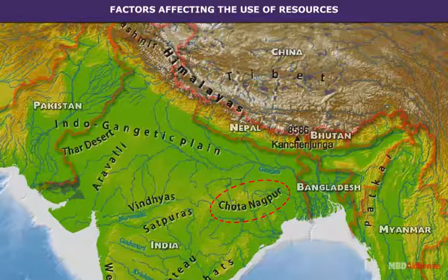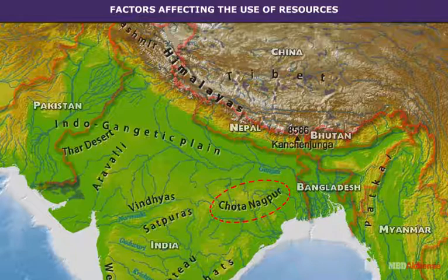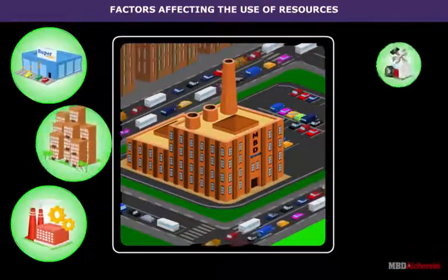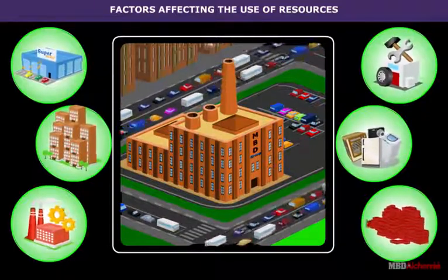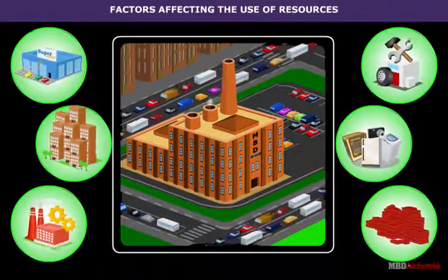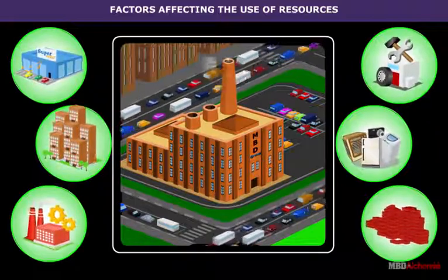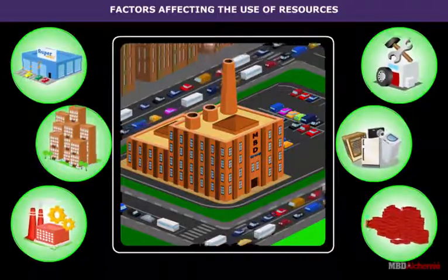Adequate Deposits: resources can be exploited commercially only if adequate deposits occur at a place. For example, iron ore deposits in the Chotanakpur area can be exploited on commercial lines because adequate deposits and other required materials are found in that area. Industrialization: it is the industries which make use of resources as raw materials and turn them into useful products. Poor nations lacking industrialization use primitive methods and obsolete technology, as well as worn-out machinery, and produce inferior quality resources that are quite expensive.